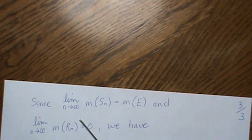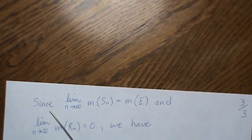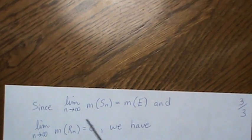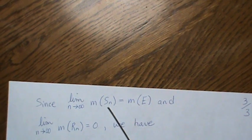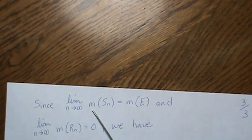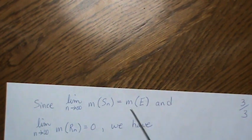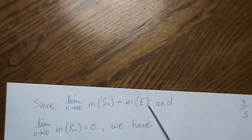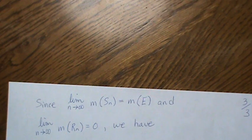So now, one note that we said earlier is that the limit as N goes to infinity of S_N, it goes to E. So the limit of the measure of these goes to, equals the measure of E, the original set that we're integrating over.